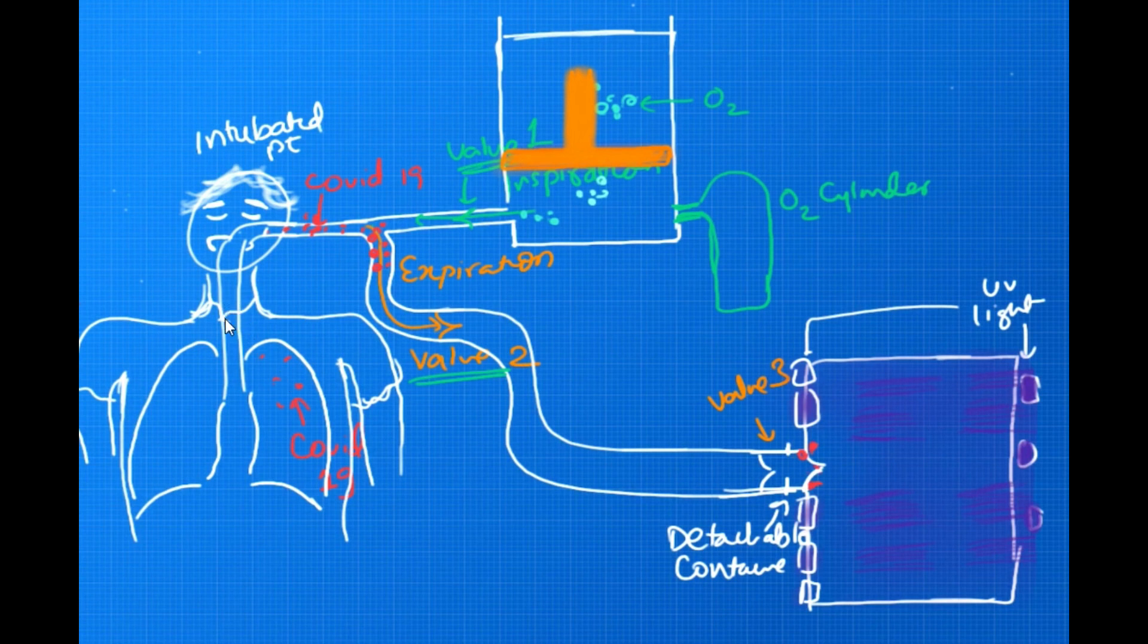Once the intubation has been done and the airway has been secured, there will be a balloon inflated around here within the trachea of the patient, and on that the mechanical ventilator will be attached. One is inflow and one is outflow, inspiratory and the expiratory tubing.